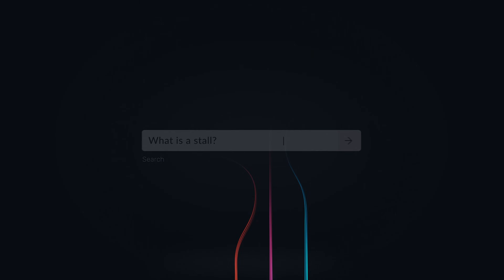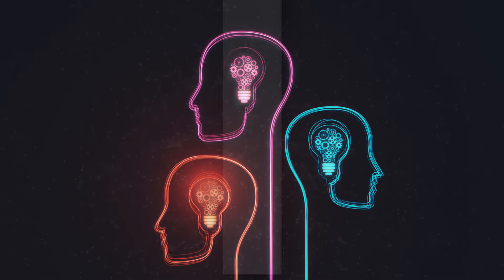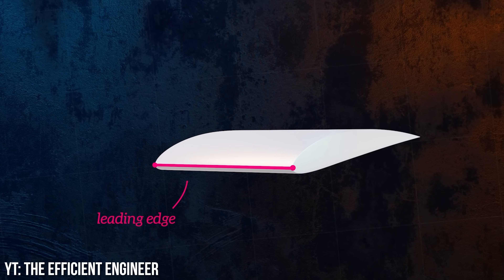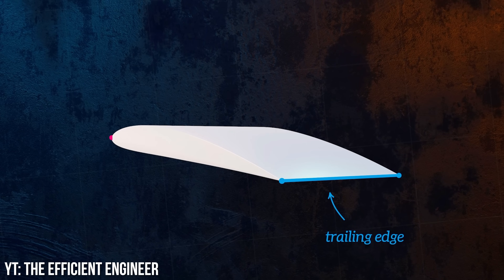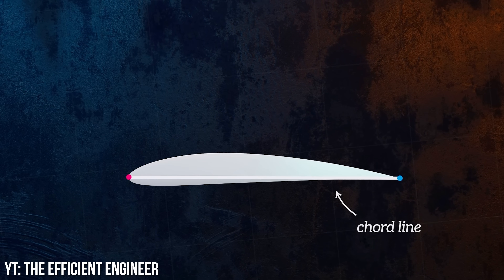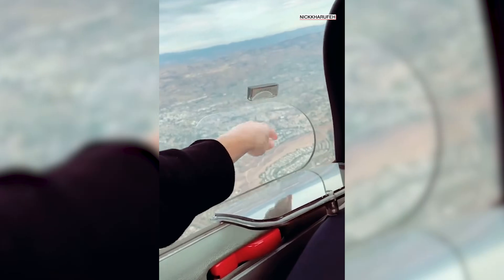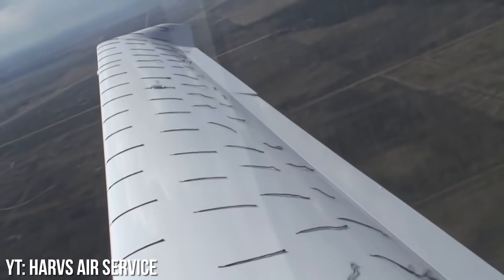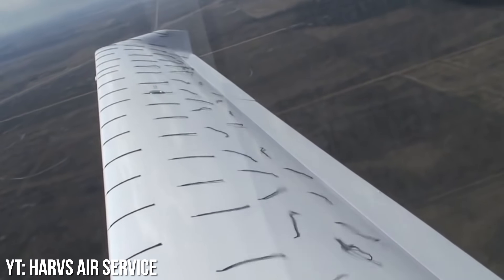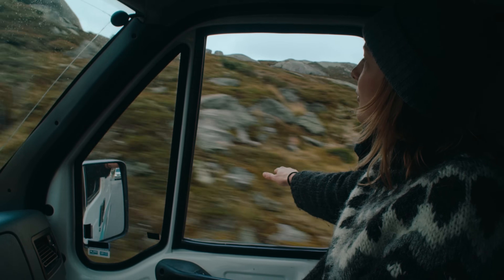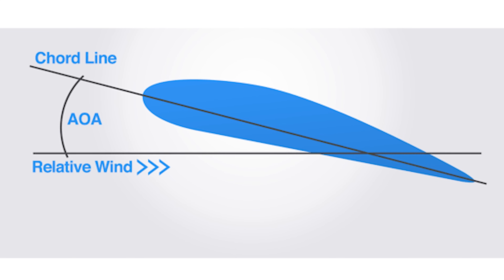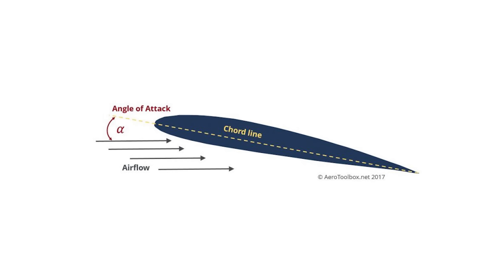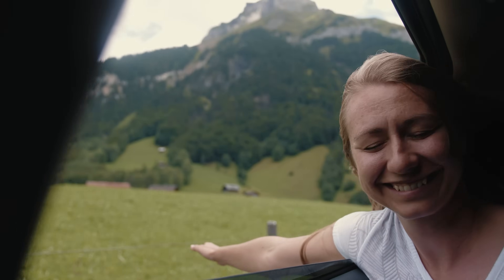What is a stall? Before we can get into that, we need to understand a couple base concepts: what a chord line is, what relative wind is, and what an angle of attack is. A chord line is an imaginary straight line connecting the leading edge of a wing to the trailing edge of a wing. Relative wind is the airflow relative to a moving object. The easiest way to grasp this is by sticking your flat hand out of the window of your moving car on the freeway — the wind blowing by is the relative wind. Angle of attack is the angle between the chord line, your flat hand, and the relative wind, the wind blowing past your car on the freeway.